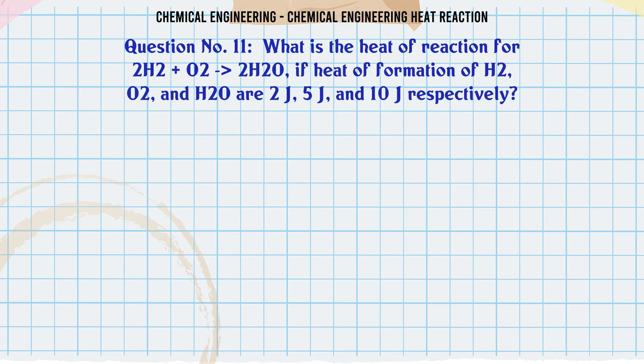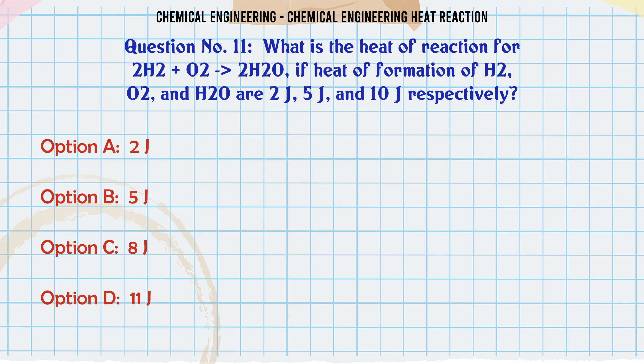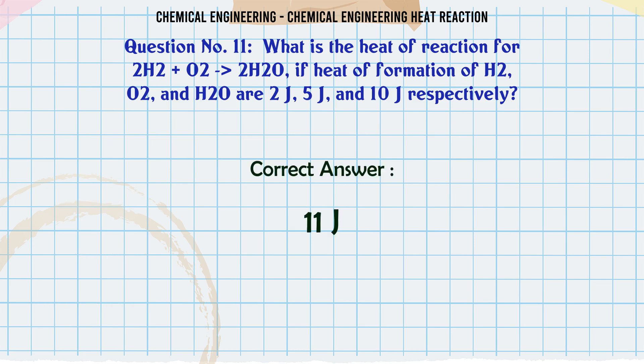What is the heat of reaction for 2H2O2 → 2H2O if heat of formation of H2O2 and H2O are 2J, 5J, and 10J respectively? A: 2J, B: 5J, C: 8J, D: 11J. The correct answer is 11J.